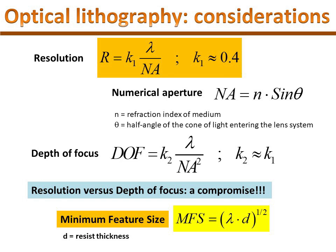Numerical aperture plays an important role both in the resolution and in the depth of focus. Larger numerical aperture systems collect more light and provide bright images and enhance the resolution of the system, but decrease the depth of the field, which is the thickness of the focus zone. The fact that numerical aperture depends on the refraction index drives us to search for lithographic techniques not only playing with the light wavelength, but also with the surrounding medium and the refraction index of this medium.